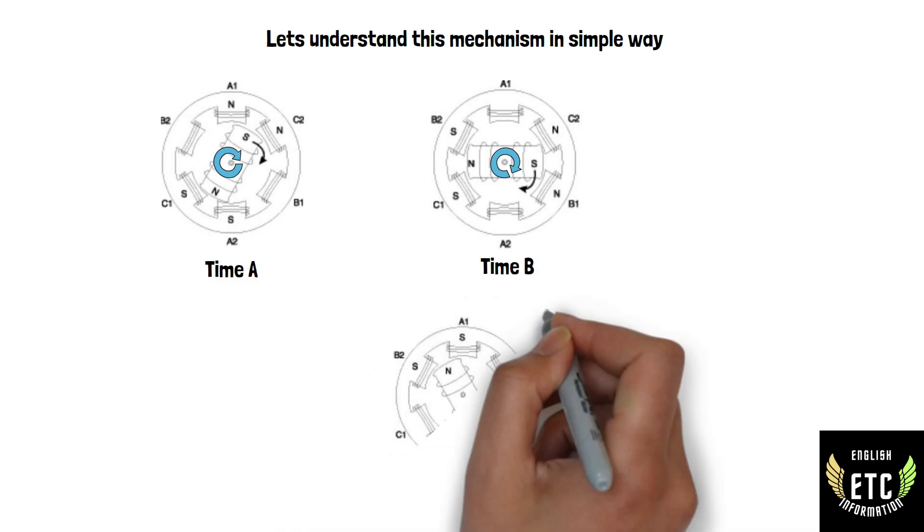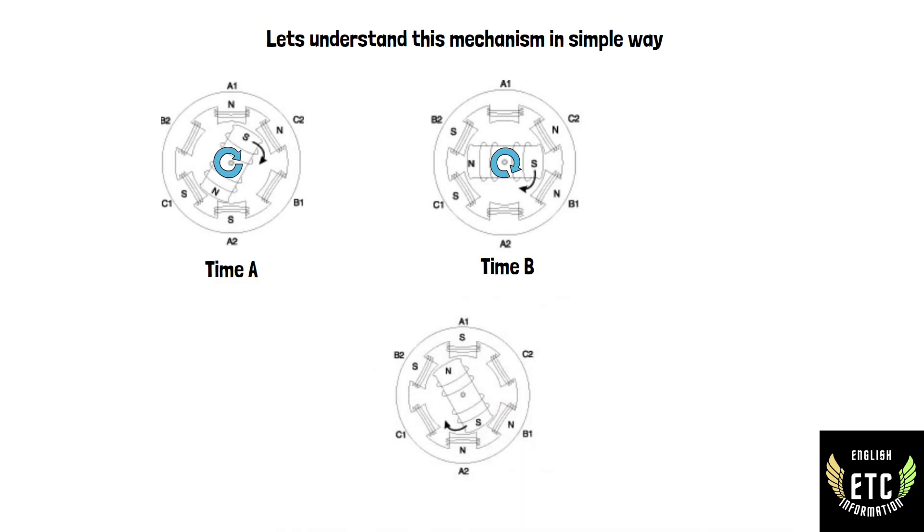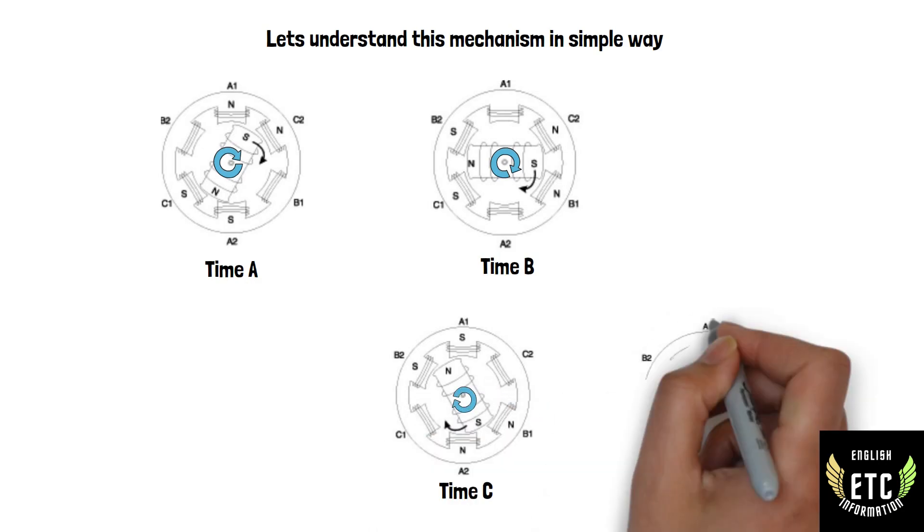At time C, B1 and A2 are north poles. At time D, A2 and C1 are north poles.